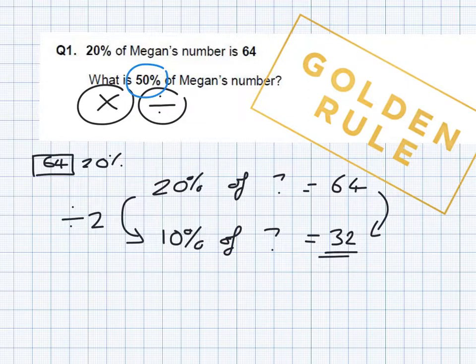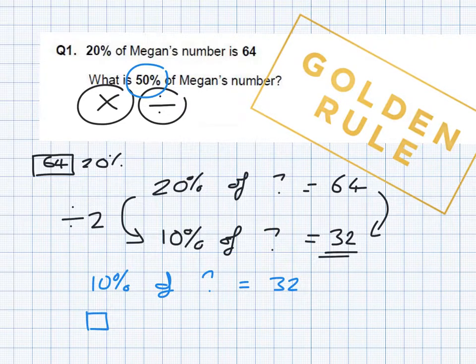We want 50% of Megan's number. So if 10% of the number is 32. So here's 10%, that's worth 32. So 20% will be 2 lots of 32, 30% would be 3 lots of 32, 40% would be 4 lots of 32, and 50% would be 5 lots of 32.